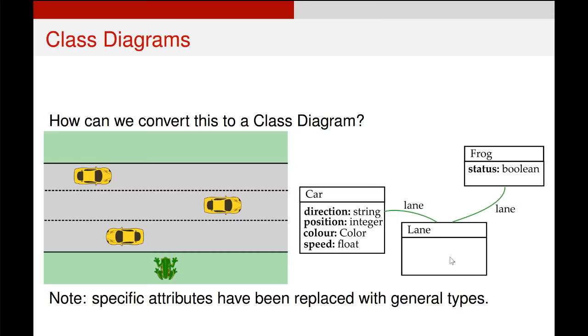These three classes still have attributes and they still have associations. So you can still see that Car is associated with Lane and Frog is associated with Lane.